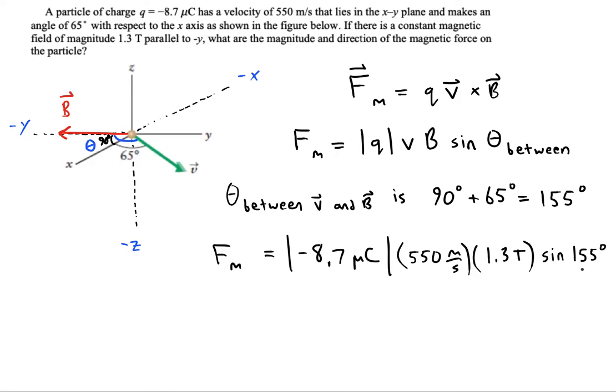The whole point of rewriting it like this is just to get the strength of it. And then we'll use right-hand rule or left-hand rule to determine the direction. I'm getting 0.00263 newtons for the magnitude.